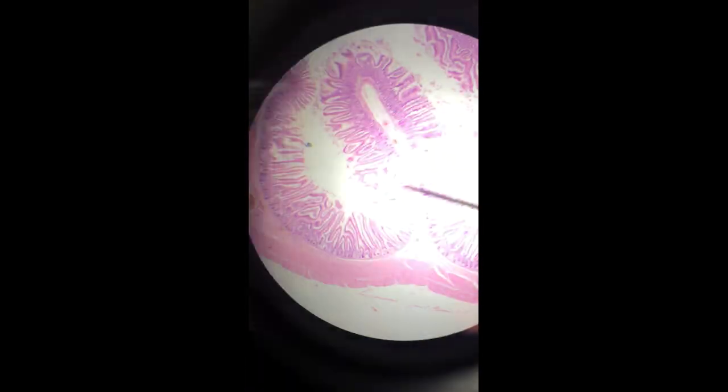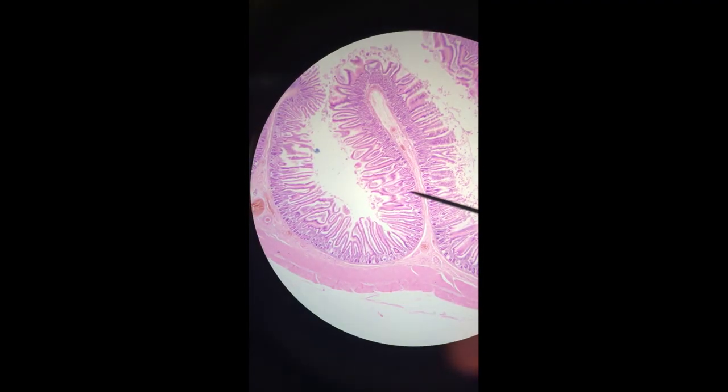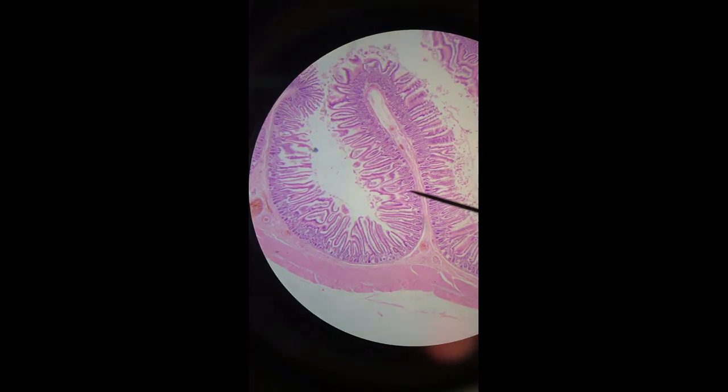So the big large fold is the circular fold and that happens because the muscularis externa down there at the bottom is shorter than the submucosa and the mucosa and so they cinch up to create those circular folds.